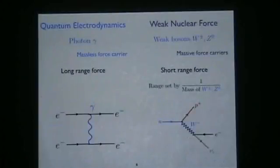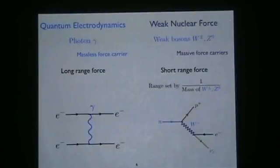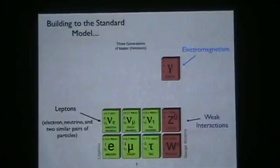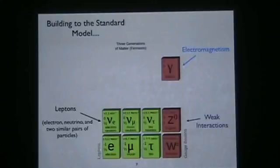To summarize: if quantum electrodynamics has a photon — a massless force carrier — it's a long-range force mediated through particle exchange. The weak nuclear force is mediated by the W and Z bosons, which are massive force carriers, making it a short-range force whose range is set by the mass of those particles. This is part of the standard model. We've also met the leptons — the matter fields — which include the electron, the neutrino, and heavier partners.